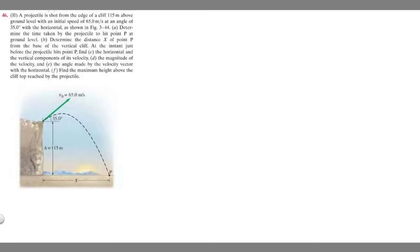In this problem, we're told a projectile is shot from the edge of a cliff 115 meters above ground level with an initial speed of 65 meters per second at an angle of 35 degrees with the horizontal. For part A, we determine the time taken by the projectile to hit point P at ground level. Part B asks for the distance X of point P from the base of the cliff. Parts C through F ask for velocity components, magnitude, angle, and maximum height above the clifftop.